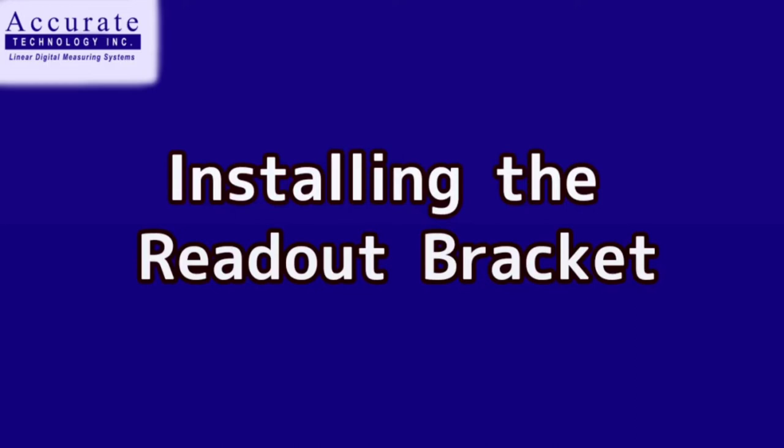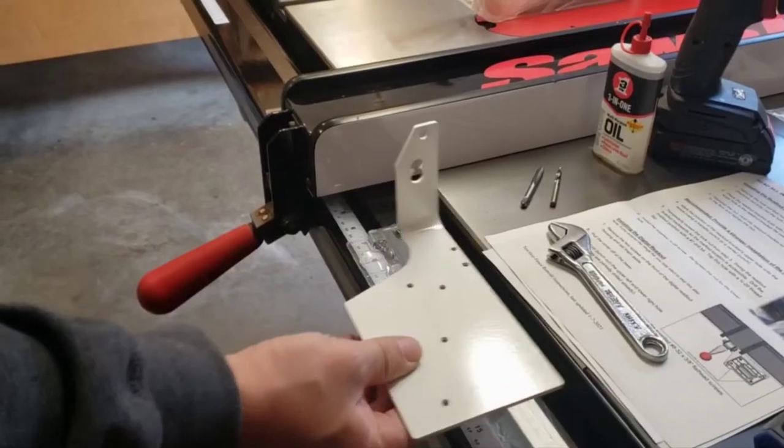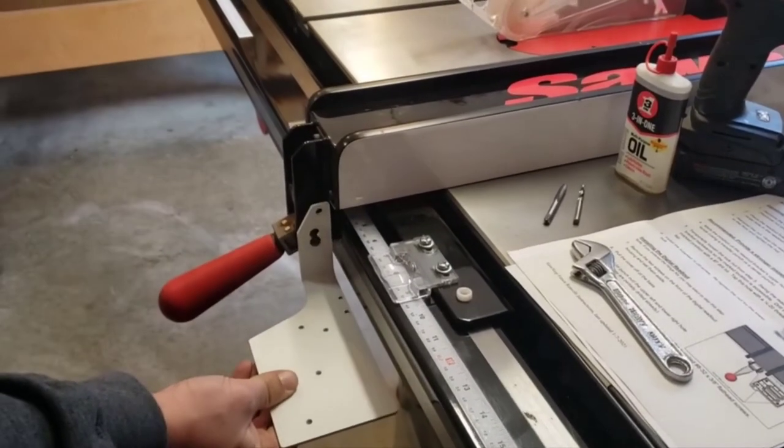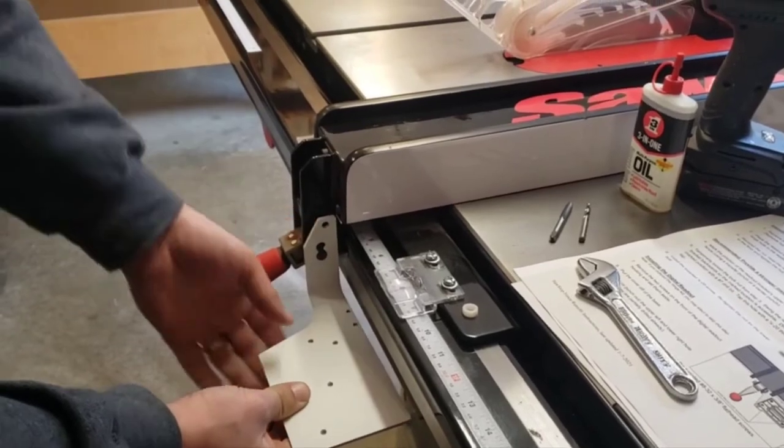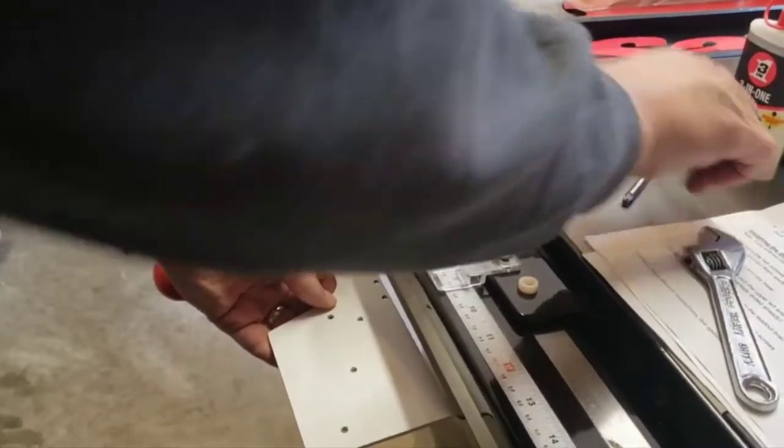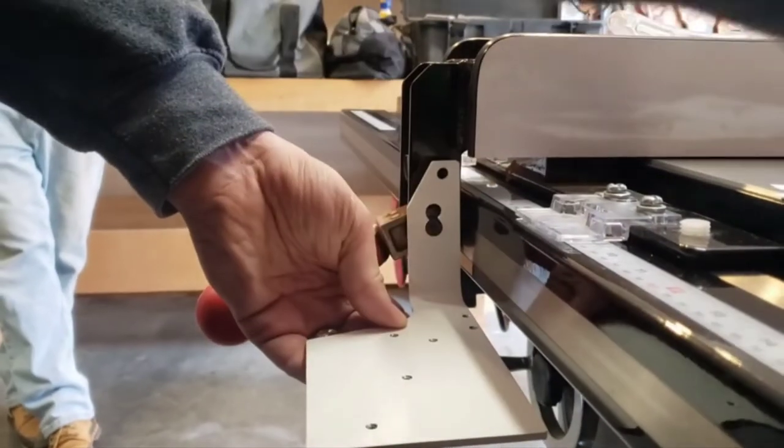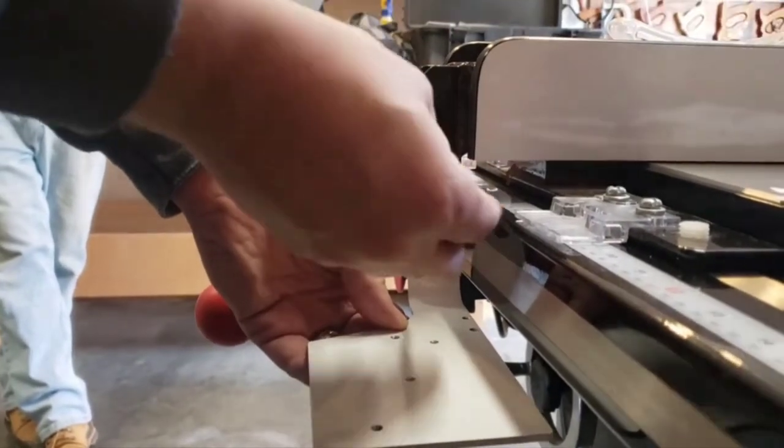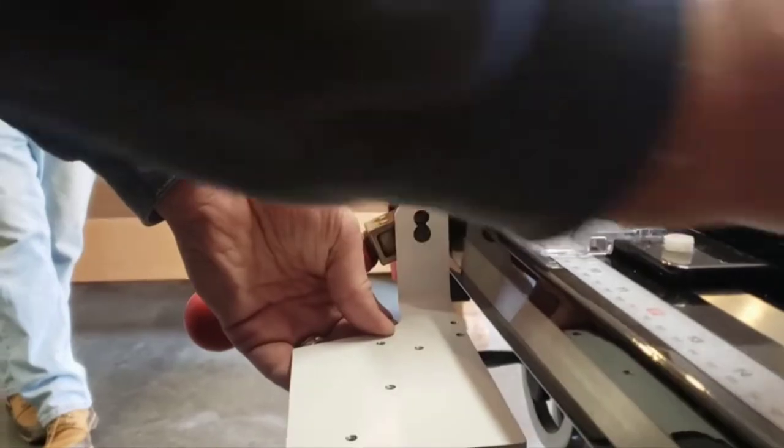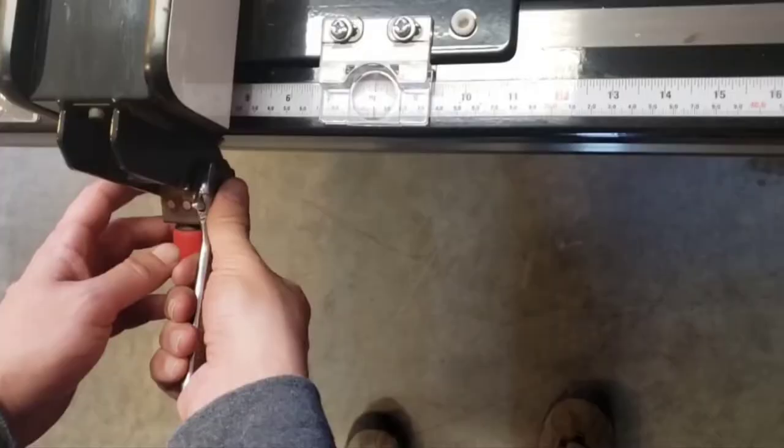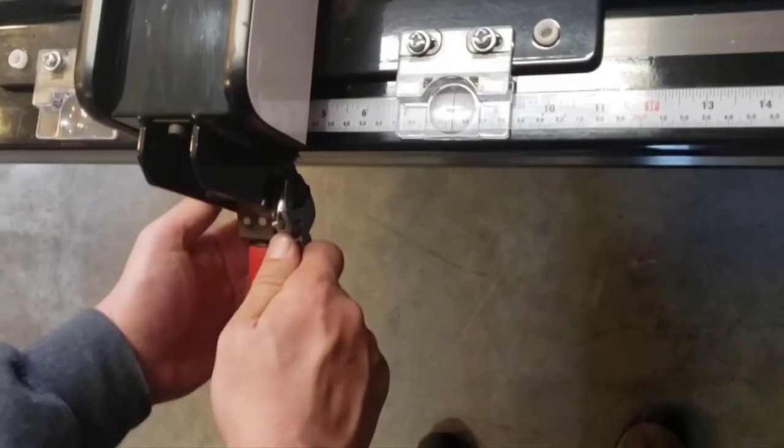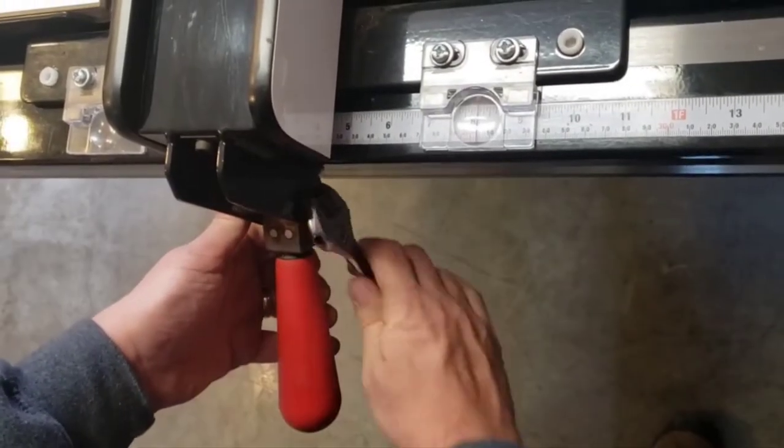Installing the readout bracket. Step 1: Remove the lock nut that holds the locking lever to the fence. Please ensure to only remove the nut, not the bolt. Step 2: Place the readout bracket flush with the right side of the fence. The large hole in the readout bracket will fit over the locking lever bolt. Step 3: Reinstall the nut. Hold the readout bracket so the bottom is parallel to the floor and tighten the nut.